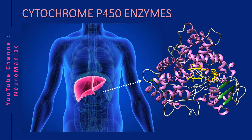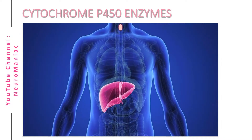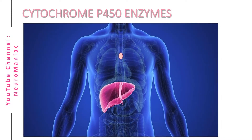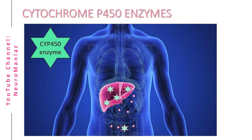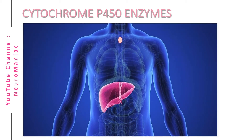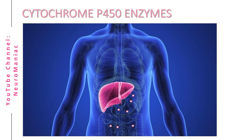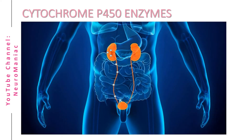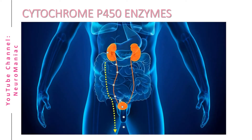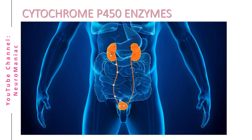Let's say for instance you ingested a pill. Along the gastrointestinal tract, the pill is broken down into smaller substrates and absorbed into the bloodstream. Whenever these substrates come into contact with CYP450 enzymes, they are biotransformed through oxidation. These enzymes unmask or add polar functional groups, resulting in a metabolite that is more water-soluble, enabling it to be easily excreted through the kidneys.